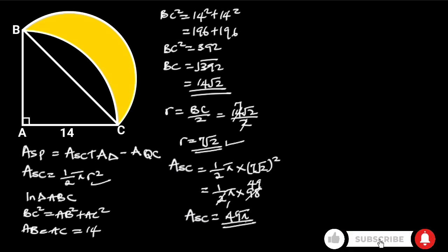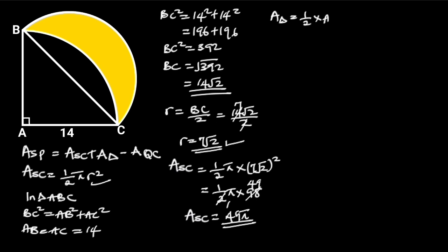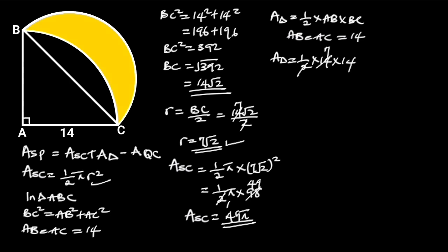Next, let's find the area of triangle ABC. The area of triangle ABC is equal to 1/2 times AB times AC. AB is equal to AC, which is equal to 14. Plugging in this value, the area of triangle ABC will be 1/2 times 14 times 14. 14 divided by 2 is 7, leaving us with 7 times 14, which is equal to 98 square units.